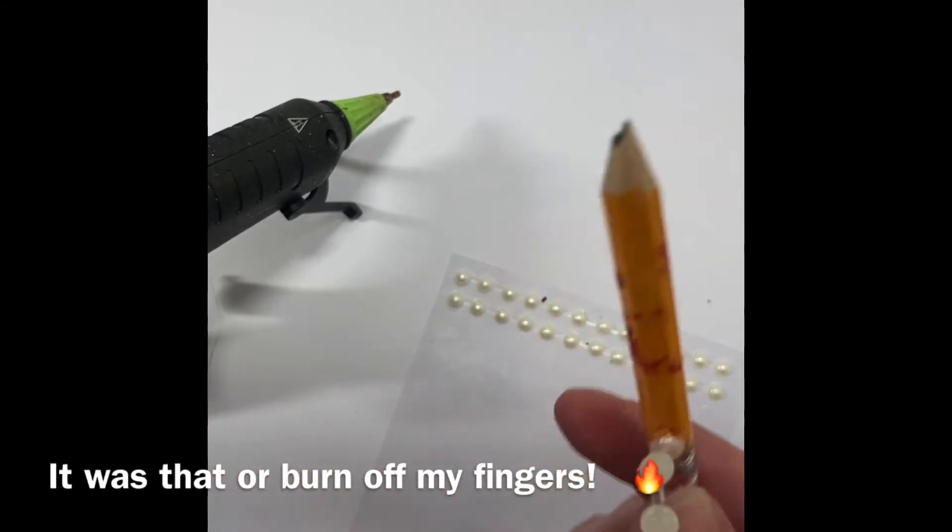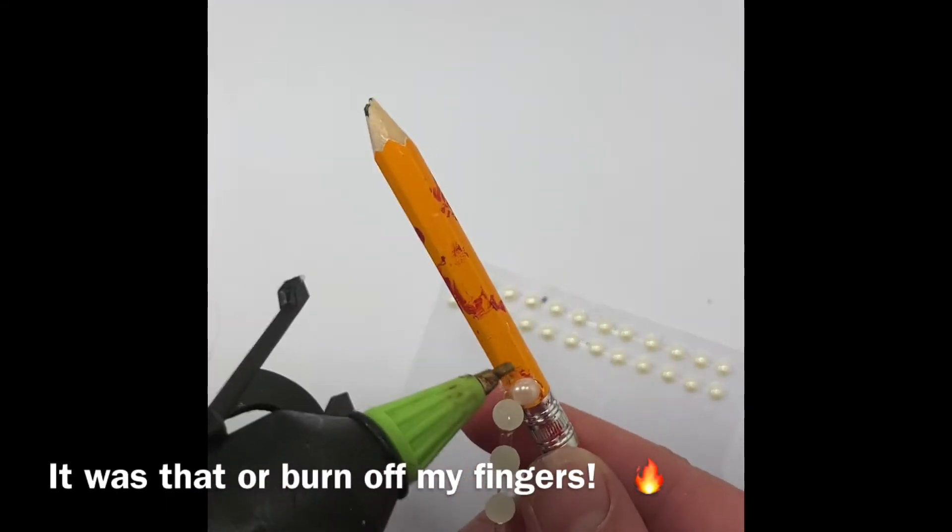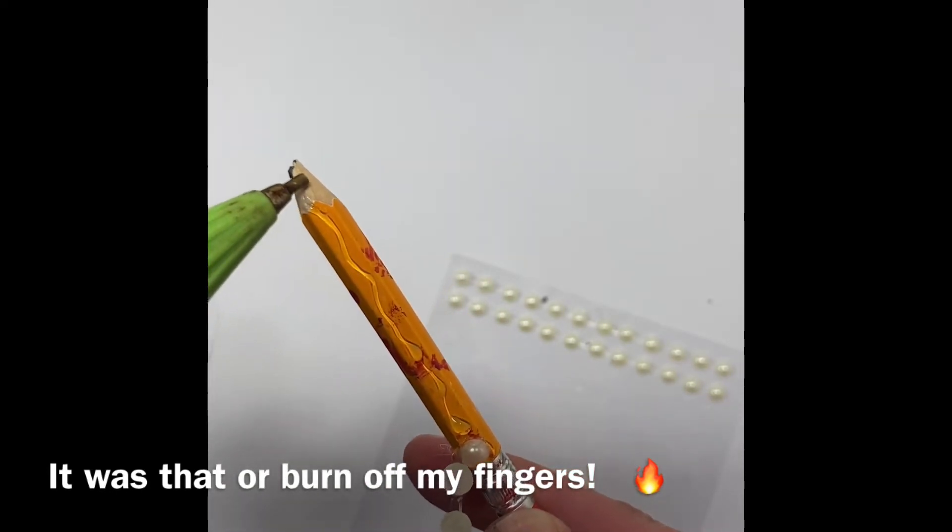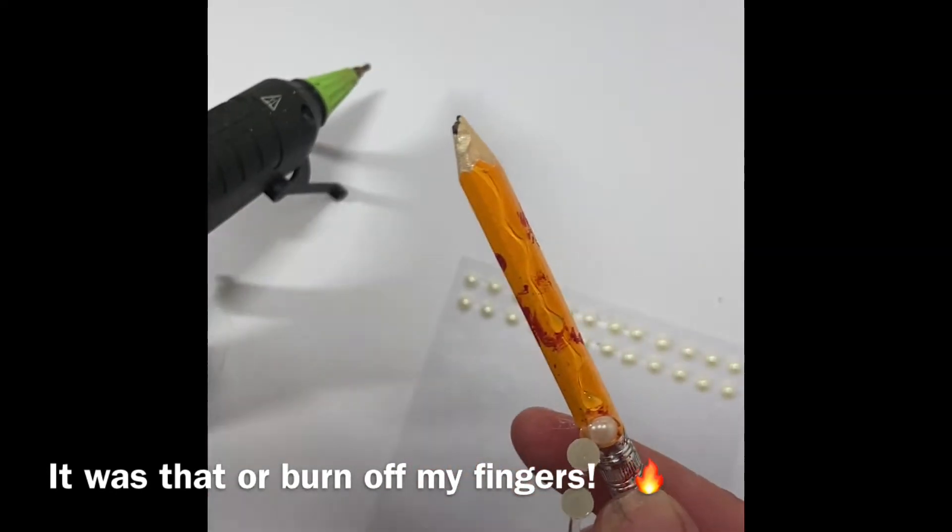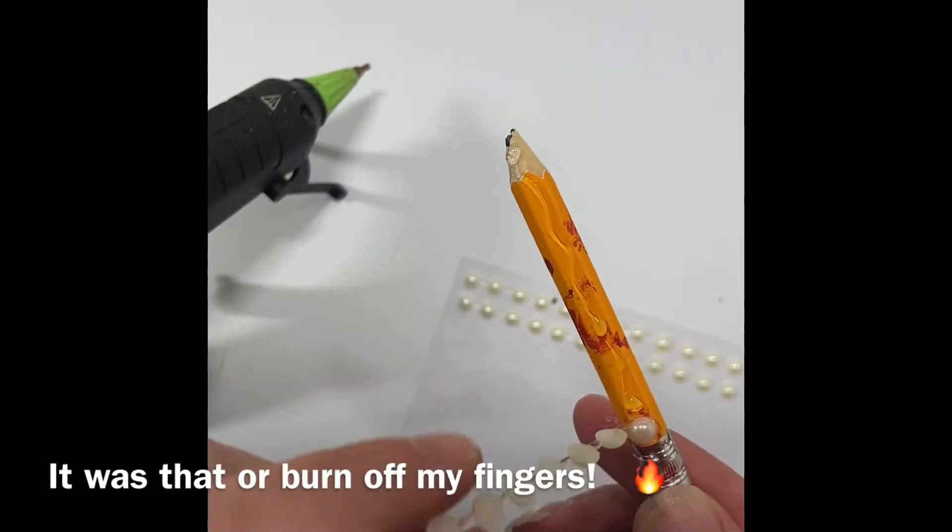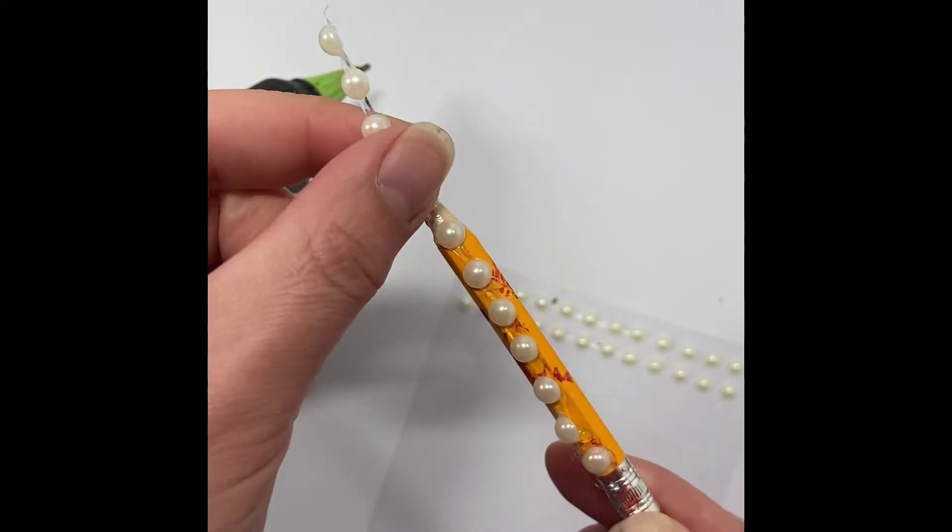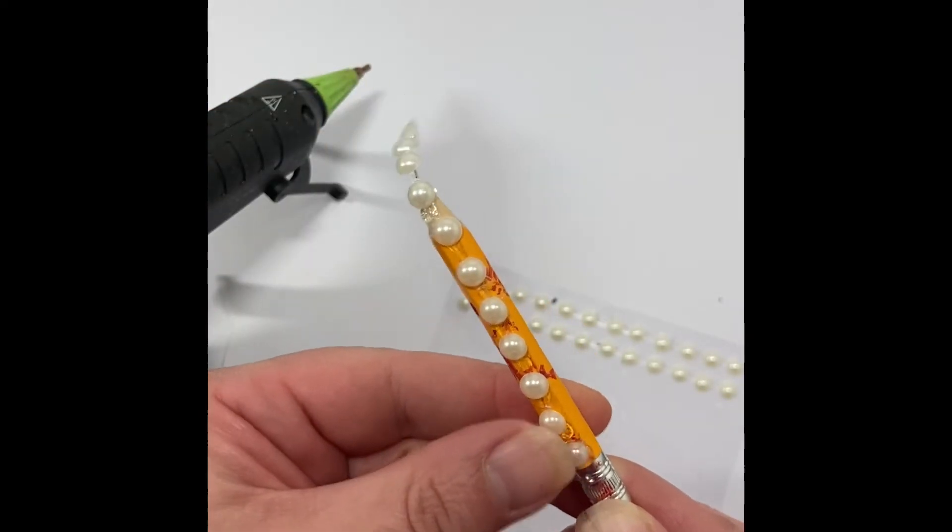To start, you're going to need some Dollar Tree pearl stickers. They come in a sheet and they're connected by a little string of plastic and it's all adhesive. But because we want these to last, we're going to use hot glue to adhere the sticker strips to the pencil.